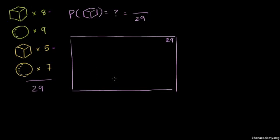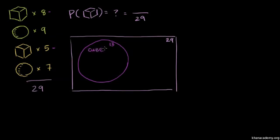The probability of getting a cube: there are 8 green cubes and 5 yellow cubes. So the total number of cubes is 8 plus 5, which equals 13. The probability of getting a cube is 13 divided by 29.